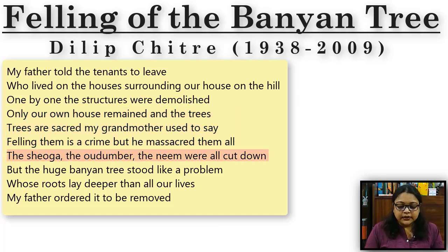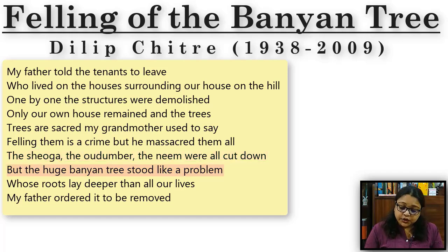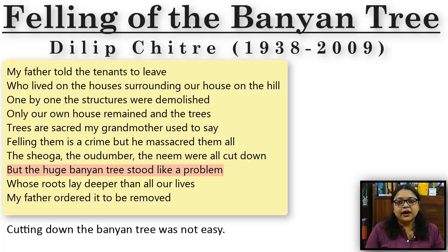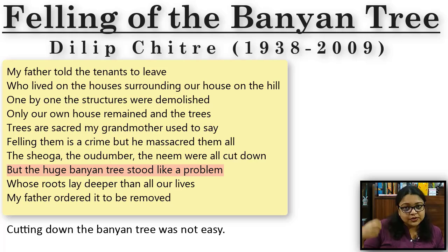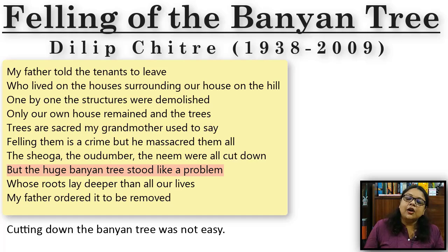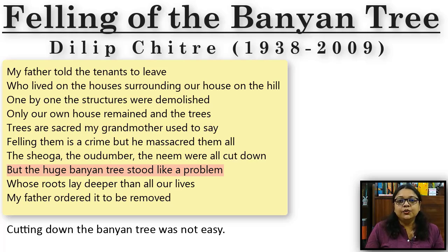The shioga, the audumber, and the neem were all cut down. But the huge banyan tree stood like a problem. The difference between the banyan tree and the other trees is that a banyan tree is huge and has aerial roots hanging from its branches which touch the ground, penetrate it, and make the tree stronger. So it is more difficult to cut down a banyan tree. The poet calls it a 'problem.'